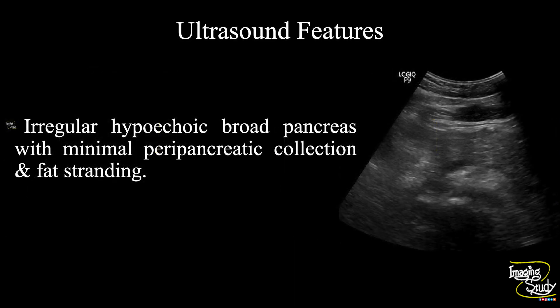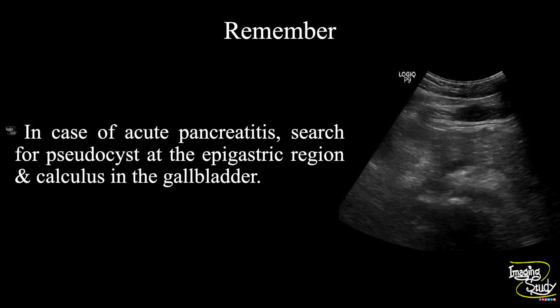In summary, an irregular hypoechoic broad pancreas with minimal peripancreatic collection and fat stranding is noted, indicating acute pancreatitis. Another take-home message: in case of acute pancreatitis, try to search for pseudocyst at the epigastric region and calculus in the gallbladder.